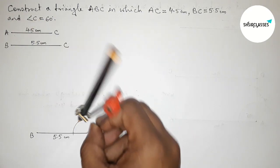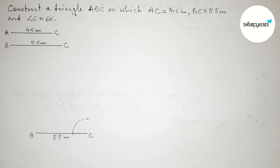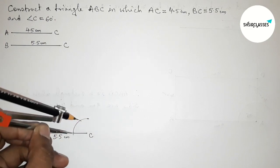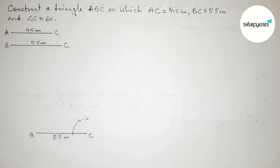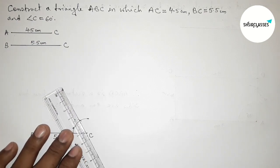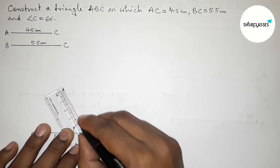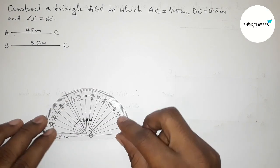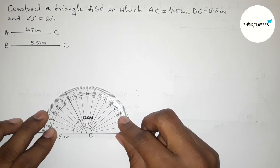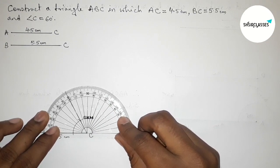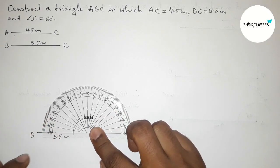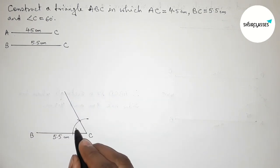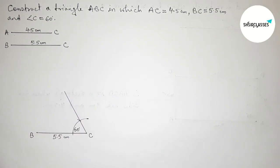Now drawing a 60 degree angle at point C. Putting the compass on point C, taking any length, and drawing an arc. Again putting the compass and taking the same length, cutting the arc. Joining this line to get a 60 degree angle. Checking with the protractor — this is perfectly a 60 degree angle.